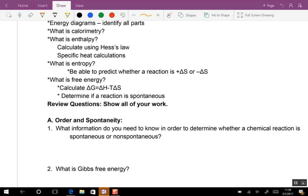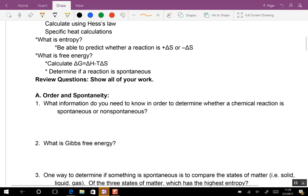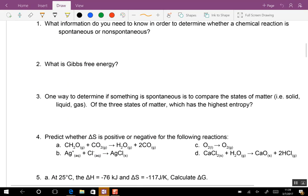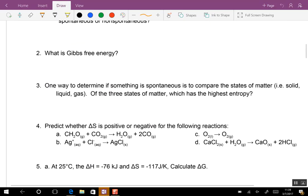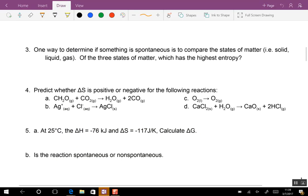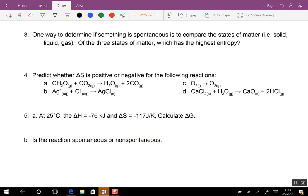Now, here we go. We're going to blow through a few of these. Number one, what information do you need to know in order to determine whether a chemical reaction is spontaneous or non-spontaneous? You need G, but what do you need to know to find G? H and S and T. I'm going to let you define Gibbs Free Energy, that's in your book at home. Also, number three you can do.